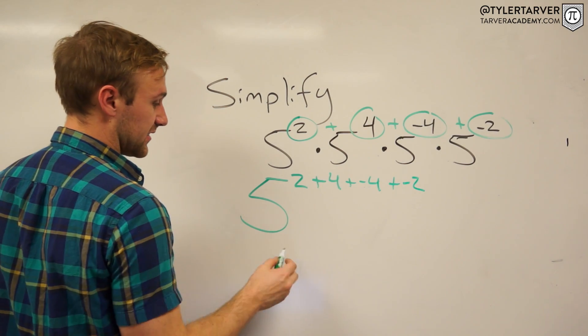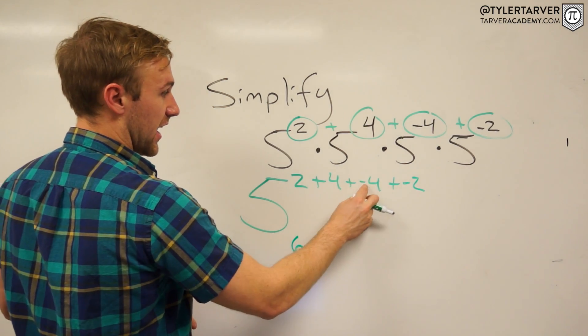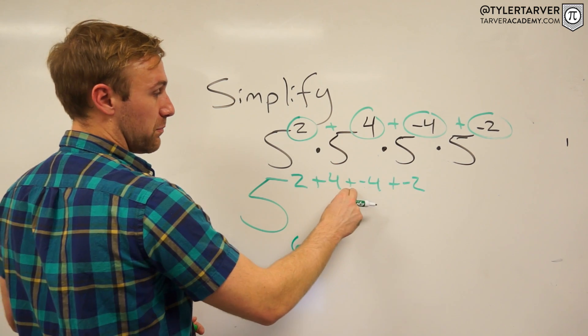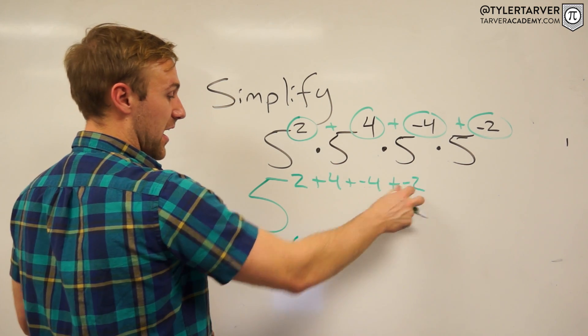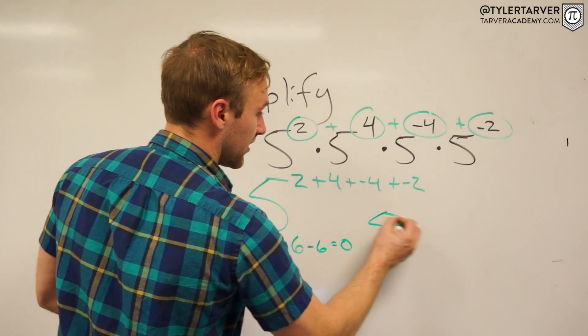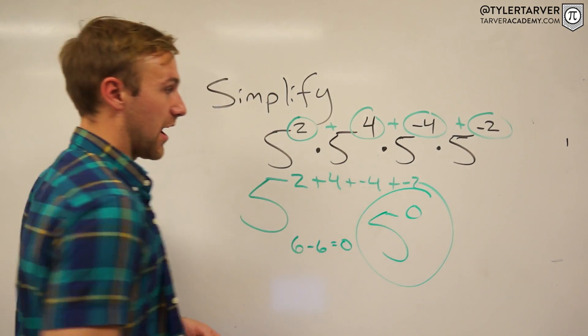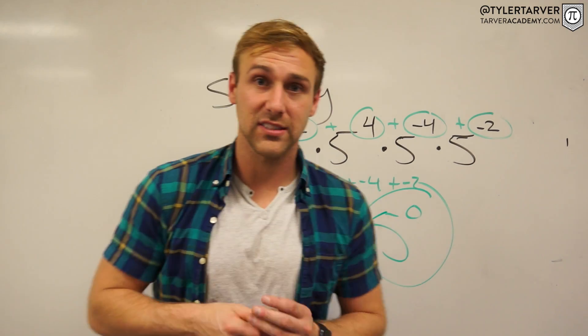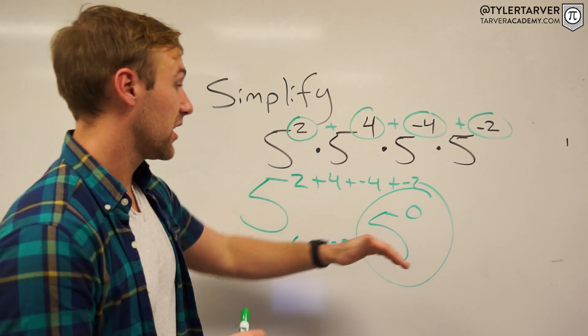Now two plus four is six. And then negative four, I mean really plus a negative means minus four and then minus two. So minus six, which is zero. Correct? So I'm five to the zero power right there. But that's not where you want to stop in this equation. That's not where you stop in equations.